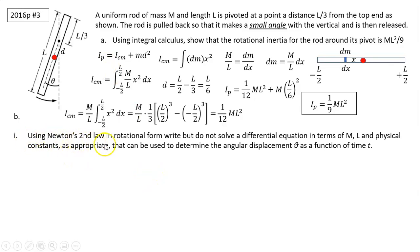Next part. Using Newton's second law in rotational form to write but do not solve a differential equation in terms of m, l, and physical constants as appropriate that can be used to determine the angular displacement theta as a function of time. So Newton's second law in rotational form is net torque equals to I alpha. What is producing the torque in this case? That is gravity. Gravity is the one producing the torque.